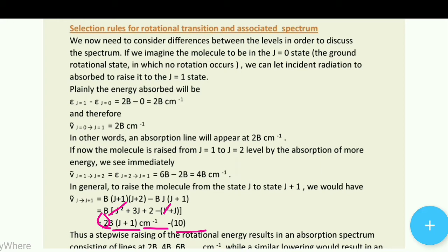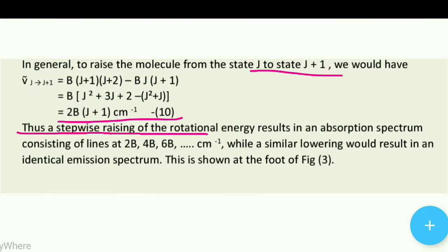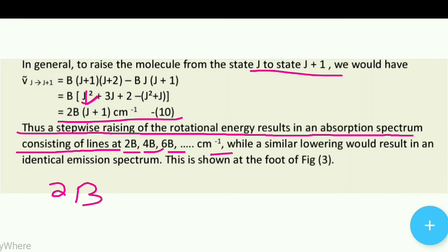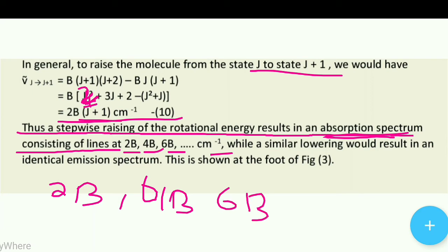Thus, a stepwise raising of rotational energy results in an absorption spectrum consisting of lines at 2B, 4B, 6B cm⁻¹, and so on. Substituting J=0 gives 2B; J=1 gives 4B; J=2 gives 6B, and so on — each value of J yields one absorption line.